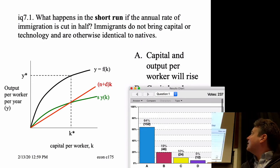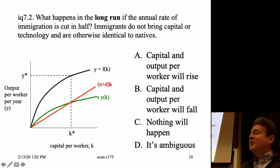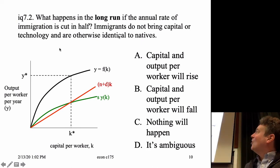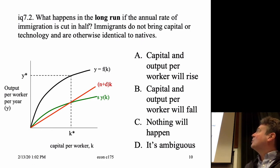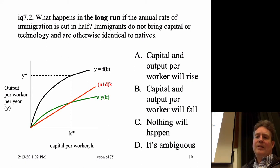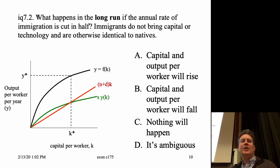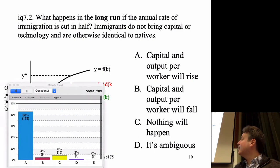In the long run, what happens with the same scenario — immigration cut in half, immigrants don't bring capital or technology, otherwise identical to natives? The red curve pivots downward. If the population growth rate falls, that creates a new steady-state capital per worker to the right — greater than the original K-star. So capital and output per worker rise in the long run. The answer is A.